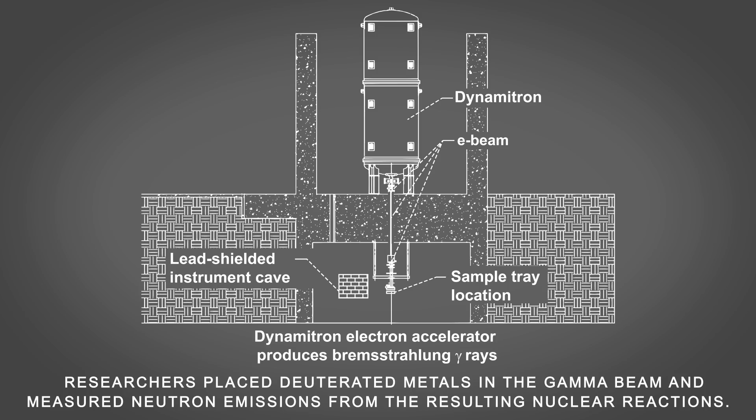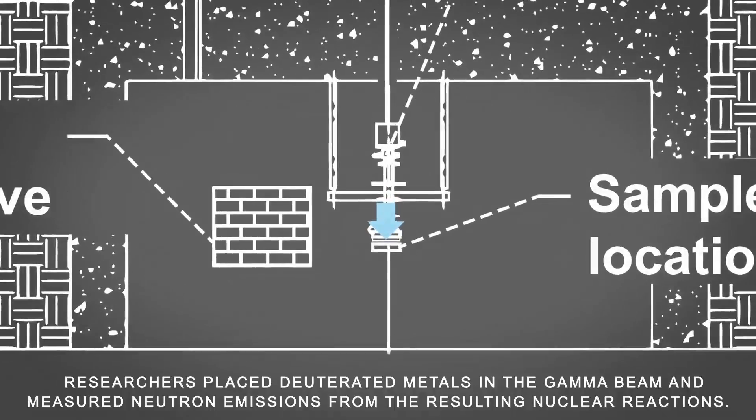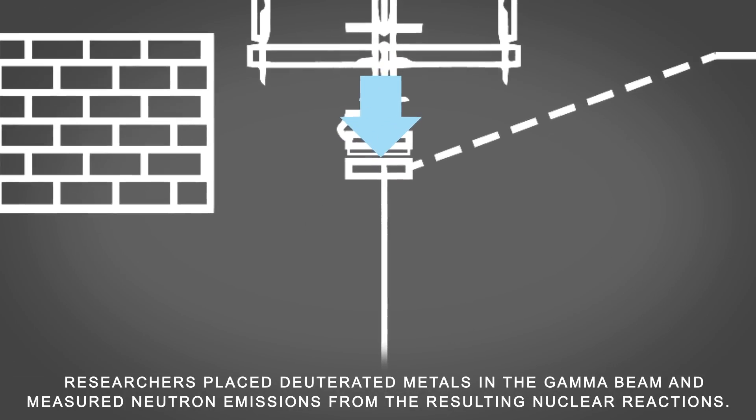Researchers placed deuterated metals in the gamma beam and measured neutron emissions from the resulting nuclear reactions.